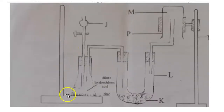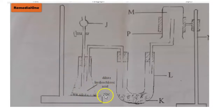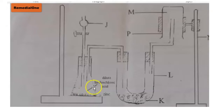We have a stand here, and there is a conical flask here. Inside the conical flask there is diluted hydrochloric acid and also zinc metal or zinc granules. Because of these two reagents — diluted hydrochloric acid and zinc granules — we are very sure that the gas being produced here is hydrogen gas, which is why we are looking at the preparation of hydrogen gas in the lab.